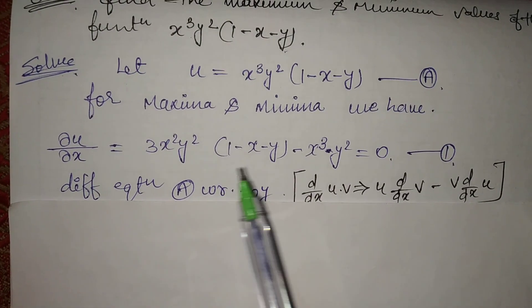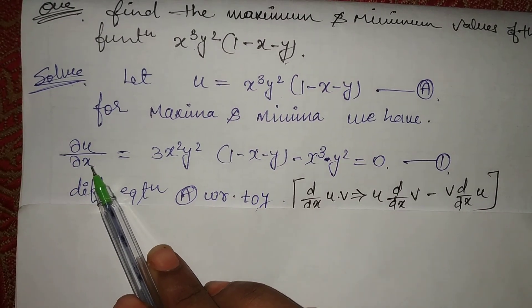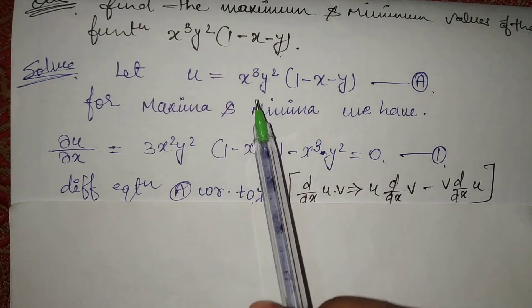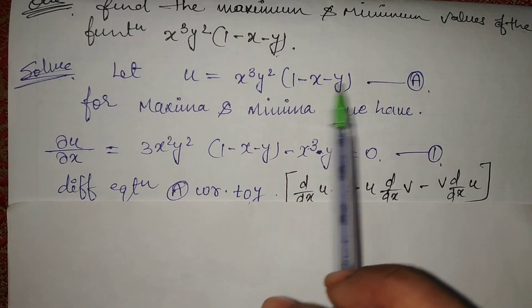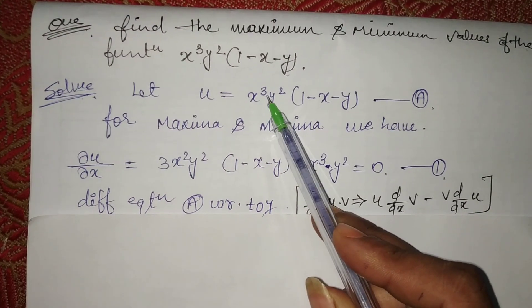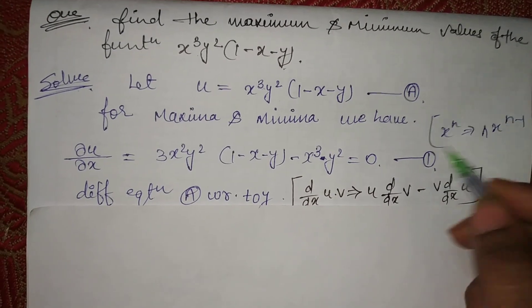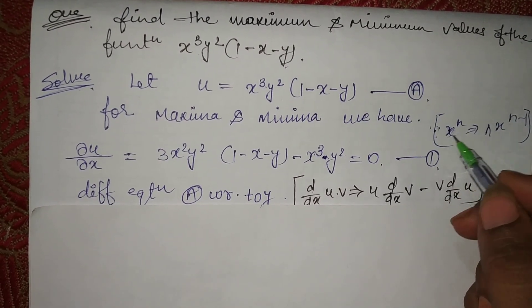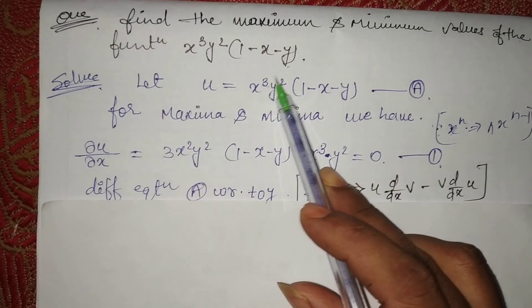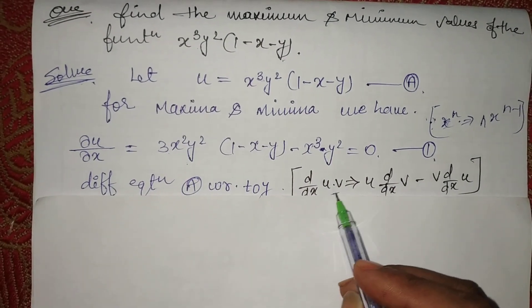We differentiate the function with respect to x. When differentiating with respect to x, only x terms are differentiated and y is treated as constant. Using the formula: d/dx of xⁿ = n·xⁿ⁻¹ — here n is 3, so 3 comes down and x becomes x². For two-variable multiplication in differentiation, use: first function · d/dx(second) + second function · d/dx(first).